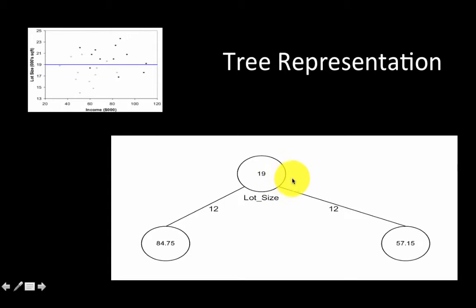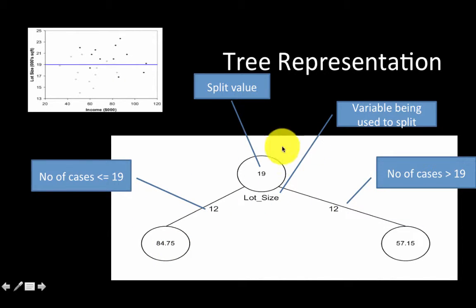The first split was at 19, so all the cases less than or equal to 19 are here, all the cases greater than 19 are here. This was on lot size 19, and then the subsequent splits were here. This is the split value 19 and this is the variable or attribute on which the split was performed, and this shows you the number of cases on either node which resulted from the split.